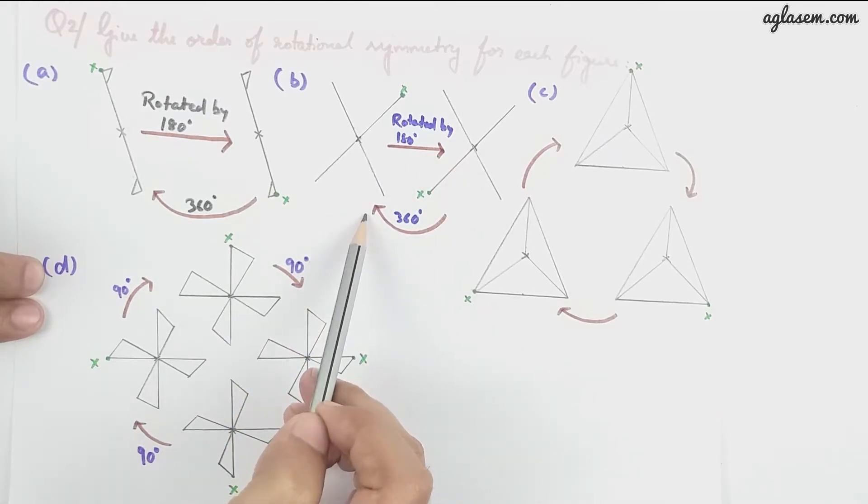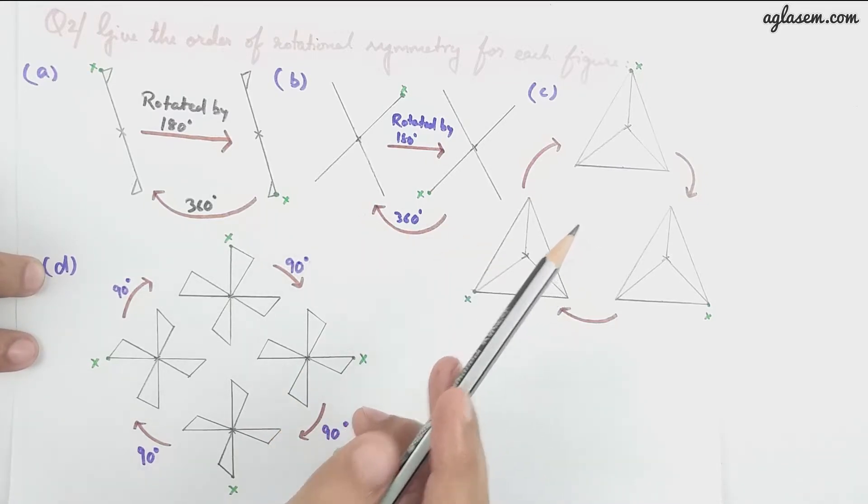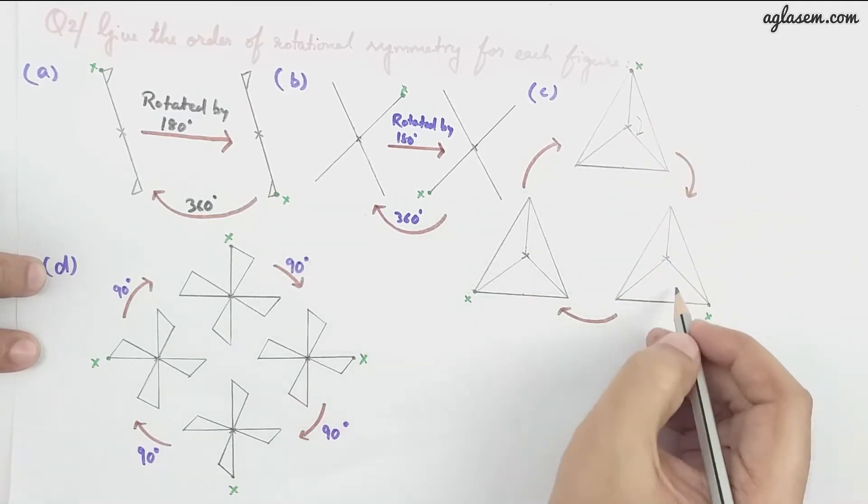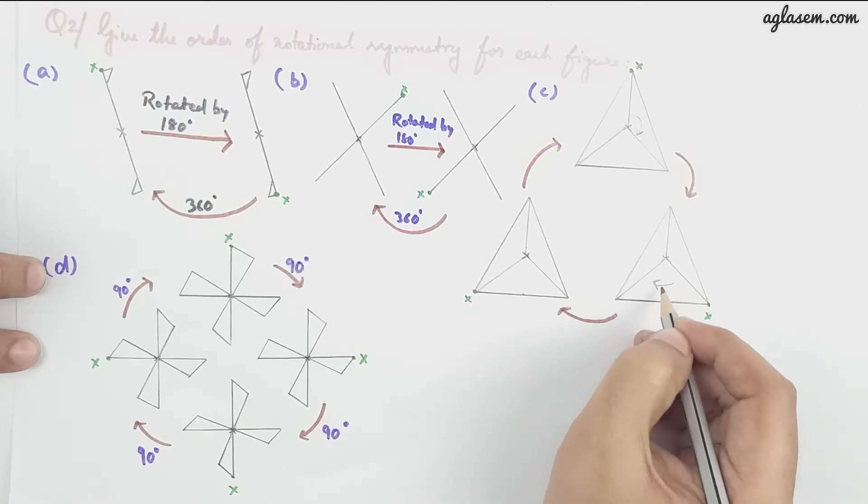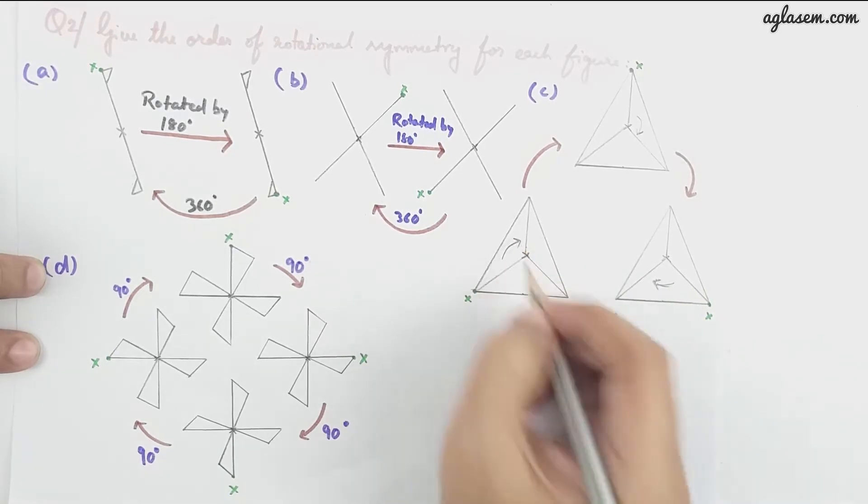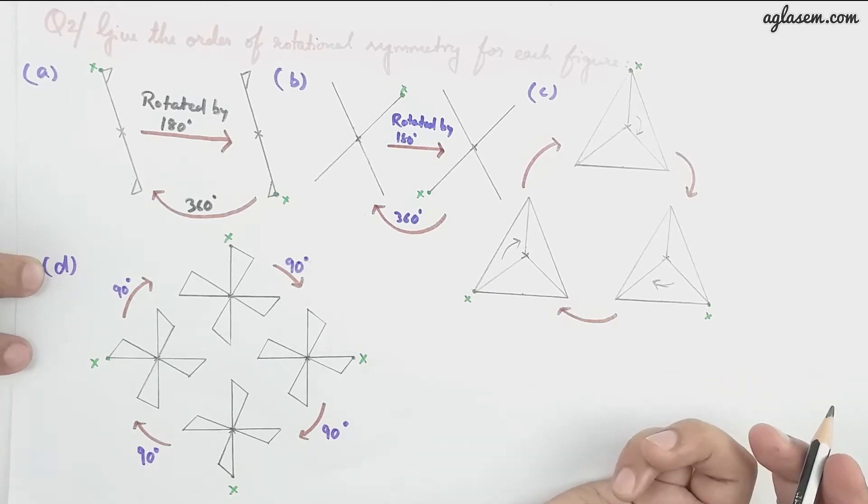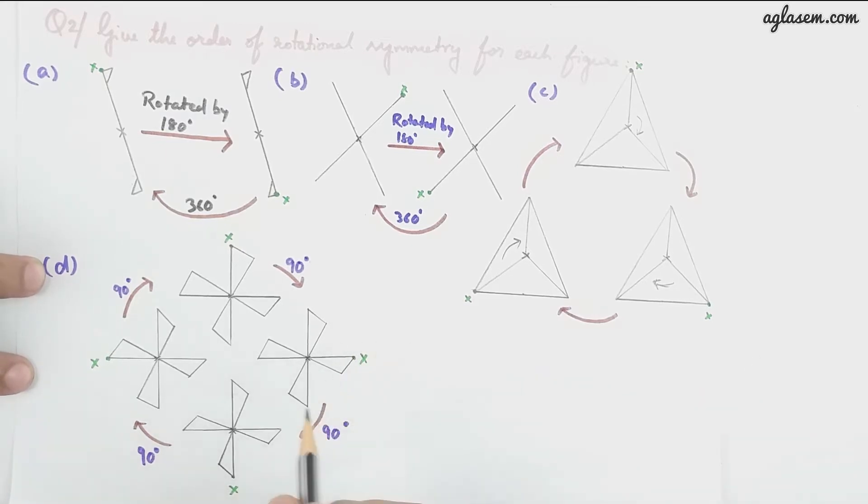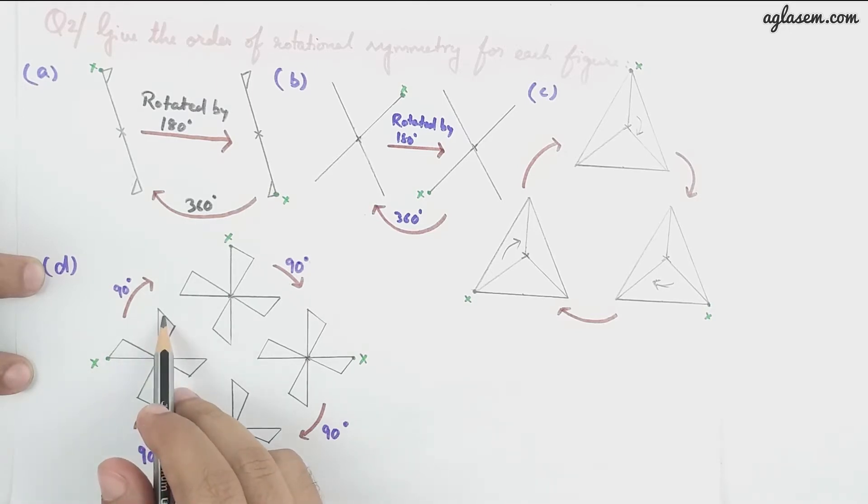In part C, it has three. We have learned this in the previous figure too. This is how it will look like. So it will have three. And lastly, figure four, that is the D part, it has four: 90 degrees, 90 degrees, 90 degrees, and again 90 degrees. The four blades come in 90 degrees each.